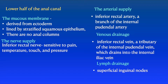There are differences between the lower and upper halves of the anal canal. In the lower half, the mucous membrane is derived from ectoderm and is therefore lined by stratified squamous epithelium with no anal columns. The nerve supply is from the inferior rectal nerve, making it sensitive to pain, touch, temperature, and pressure. Its arterial supply is the inferior rectal artery, a branch of the internal pudendal artery. The venous drainage is via the inferior rectal vein, a tributary of the internal pudendal vein draining into the internal iliac vein — systemic, not portal circulation. Lymph drainage is to the superficial inguinal nodes.